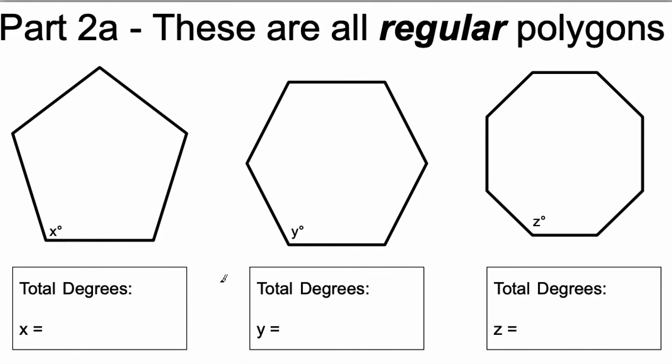Here are the solutions to part 2a. It's important to note that these are all regular polygons which means that all of the sides are the same length and all of the angles are the same size.